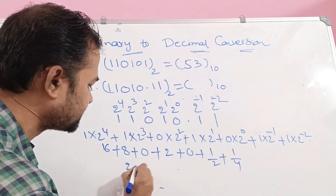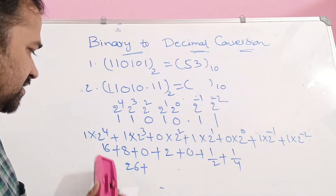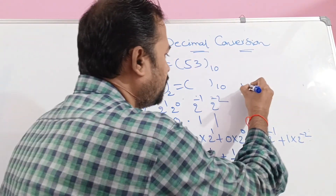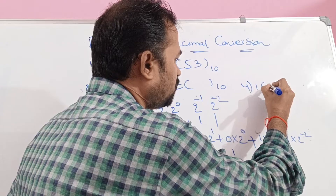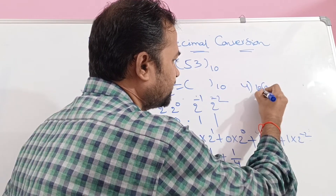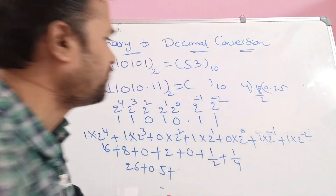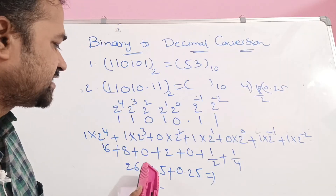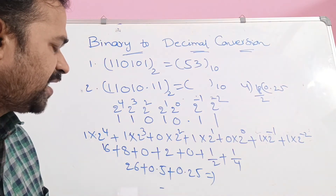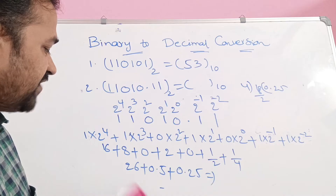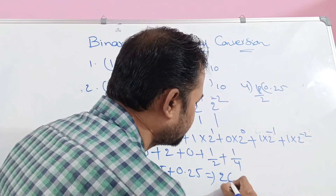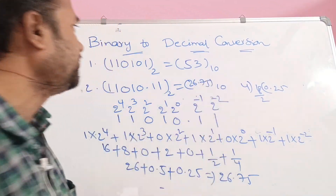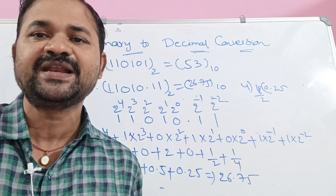So: 1 into 16 means 16, plus 1 into 8 means 8, plus 0, plus 1 into 2 means 2, plus 0, plus 1 into 1 by 2 means 0.5, plus 1 into 1 by 4 means 0.25. So 16 plus 8 means 24, 24 plus 2 means 26, 0.5 plus 0.25 means 0.75, and 26 plus 0.75 means 26.75. So in this way we can convert a binary number into the decimal number.